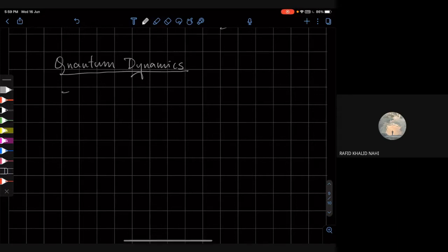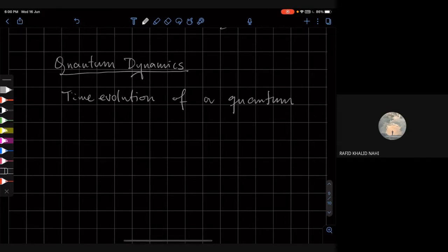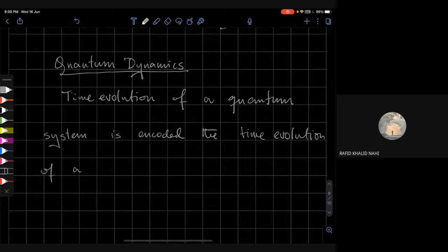The time evolution of a quantum system is encoded in the time evolution of the state vector describing that system.